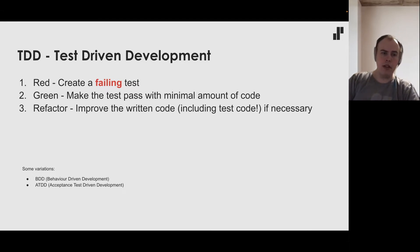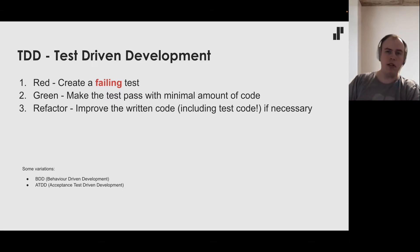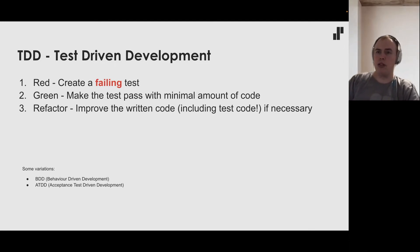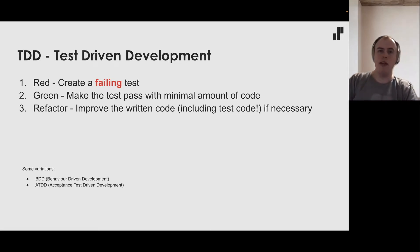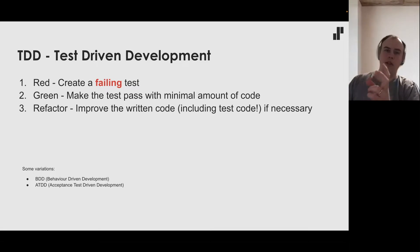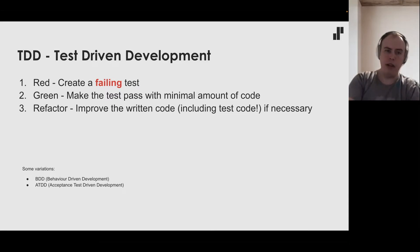Some variations of TDD are BDD — behavior-driven development — and ATDD — acceptance test-driven development. TDD is usually done at the unit testing or integration testing level, but BDD and ATDD are more like higher-level specifications, something closer to user stories: when a user logs in and clicks on something, this should happen. You write code to tie natural language to the functionality. We're not going to talk about those in more detail today, just to mention they are related.